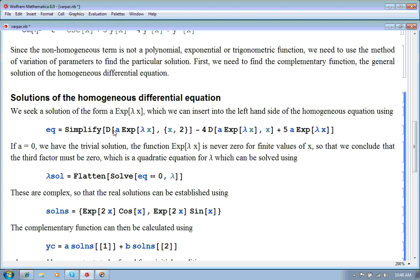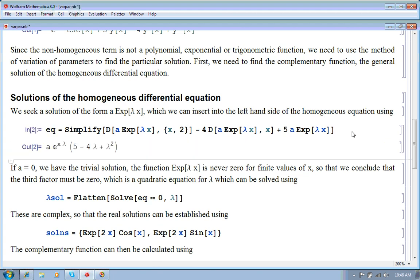So, we try to find a solution of the form a constant times an exponential function of some parameter lambda times the variable. So, we put that into the homogeneous part of the differential equation and we find that the result is, which must be zero. So, the result is the constant a times e to the lambda x times this quadratic polynomial in lambda. Well, a can't be zero because we wouldn't have a solution. e to the lambda x is never zero.